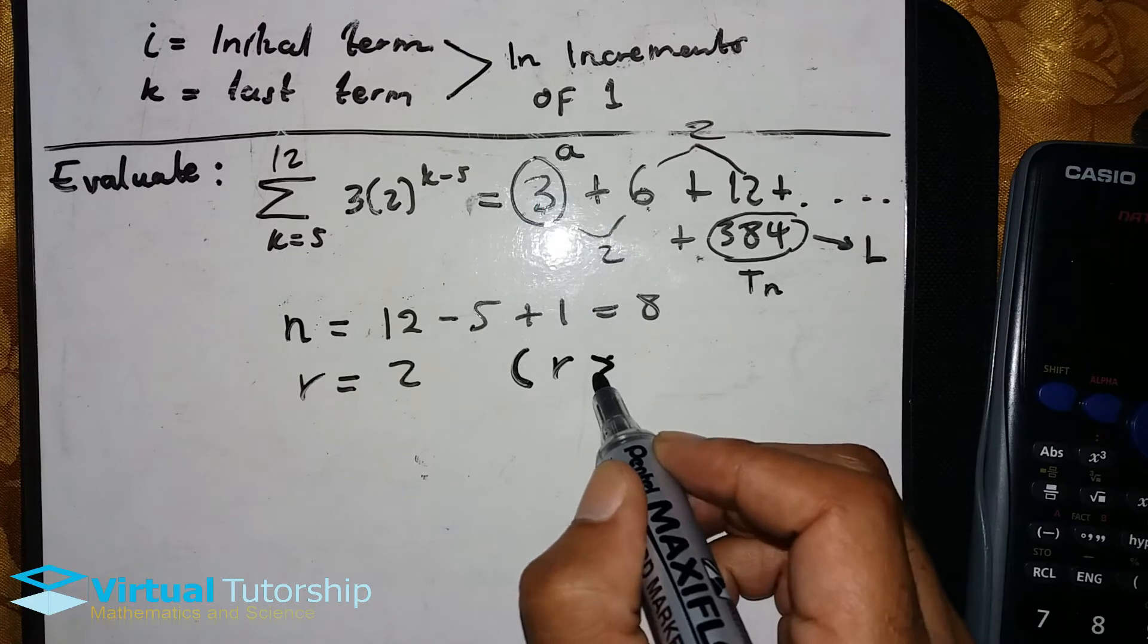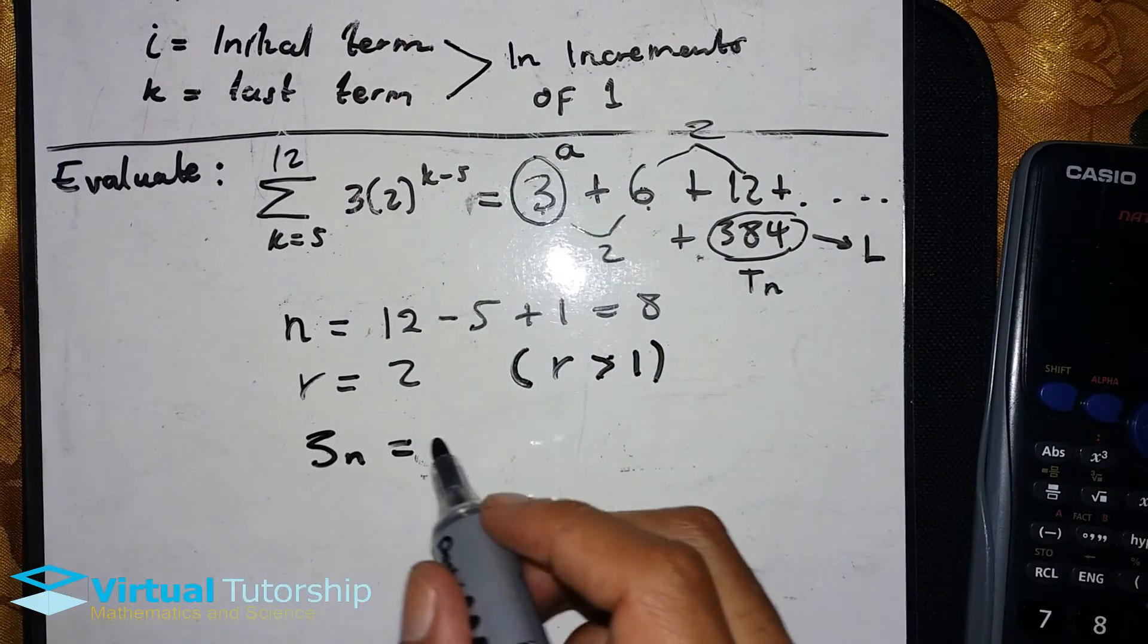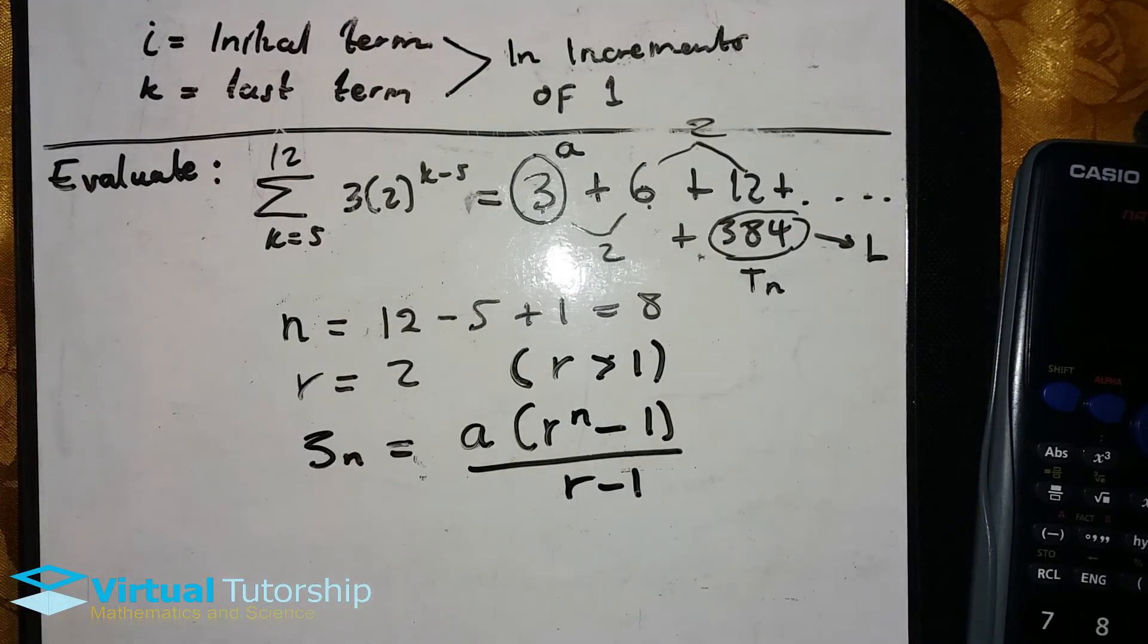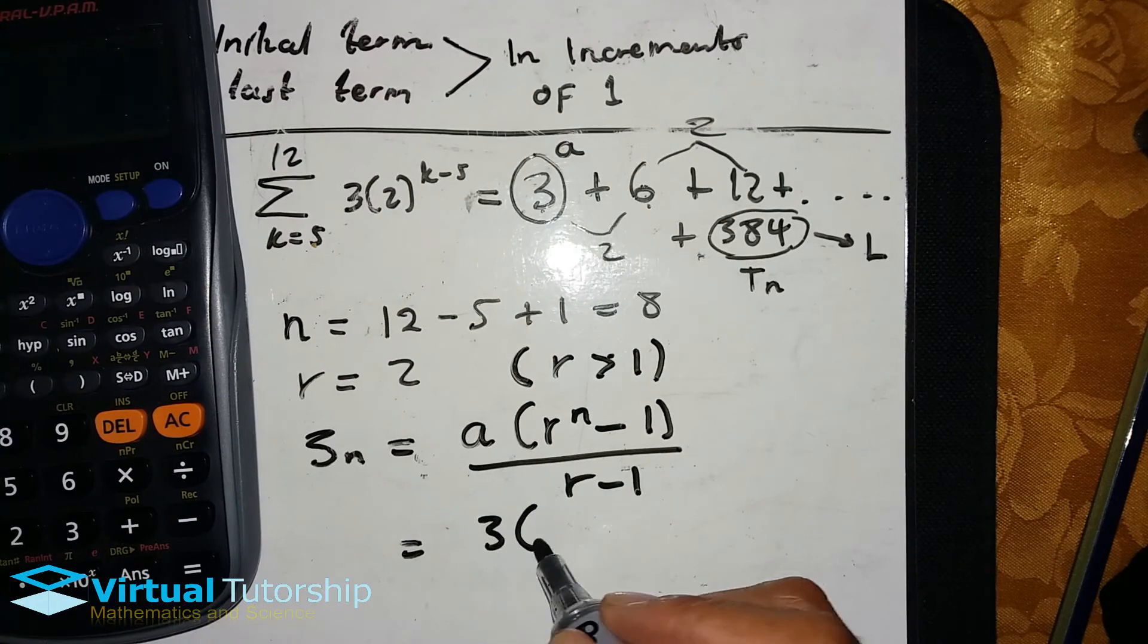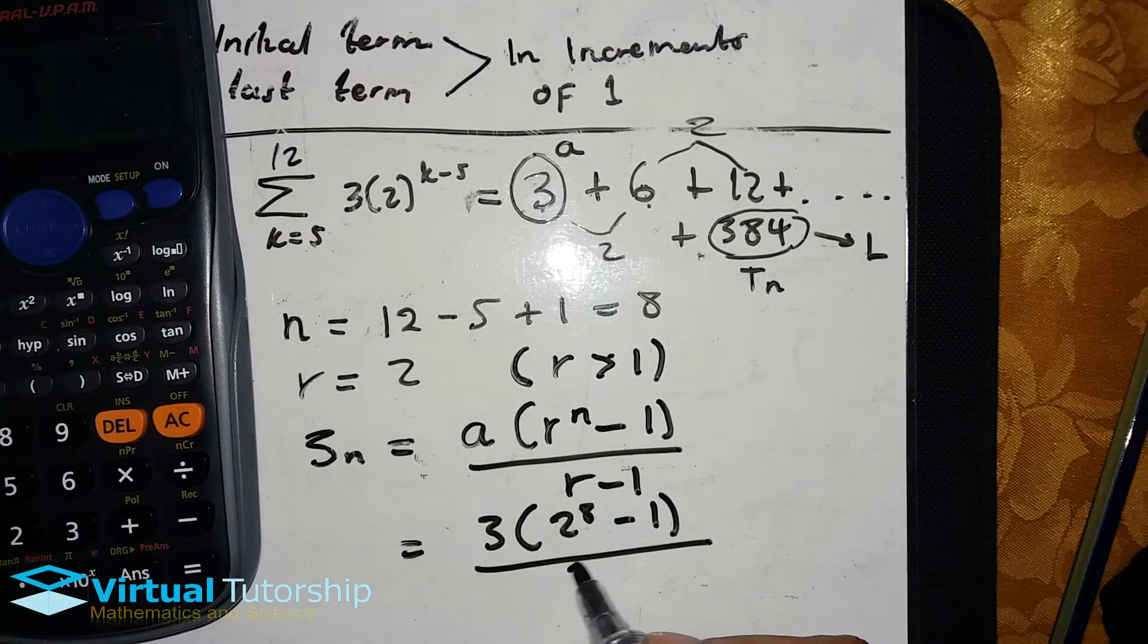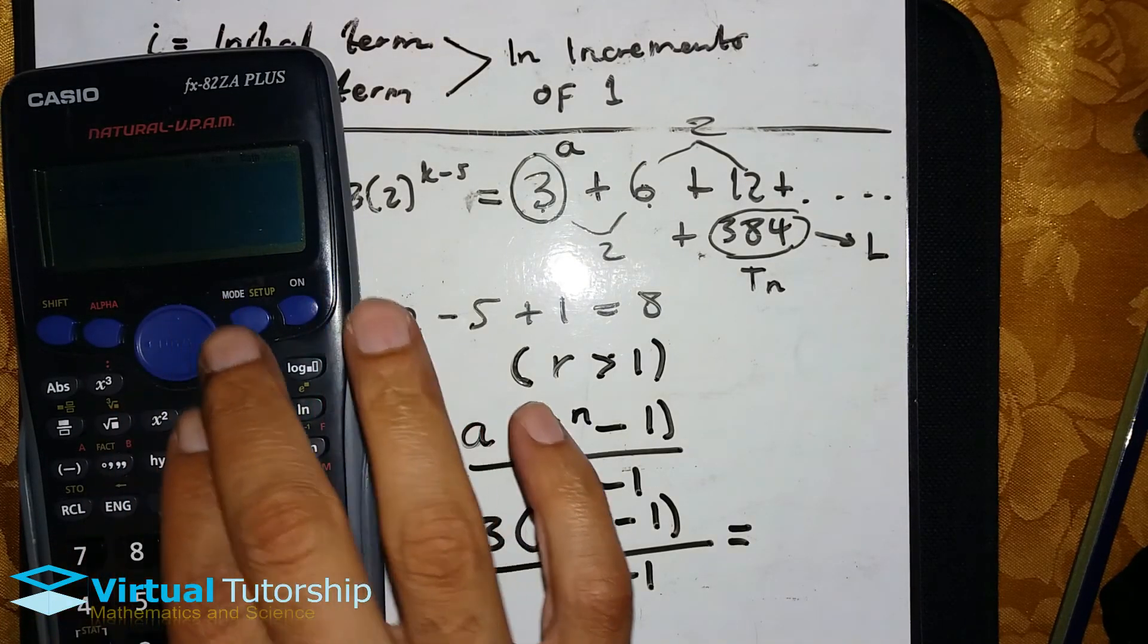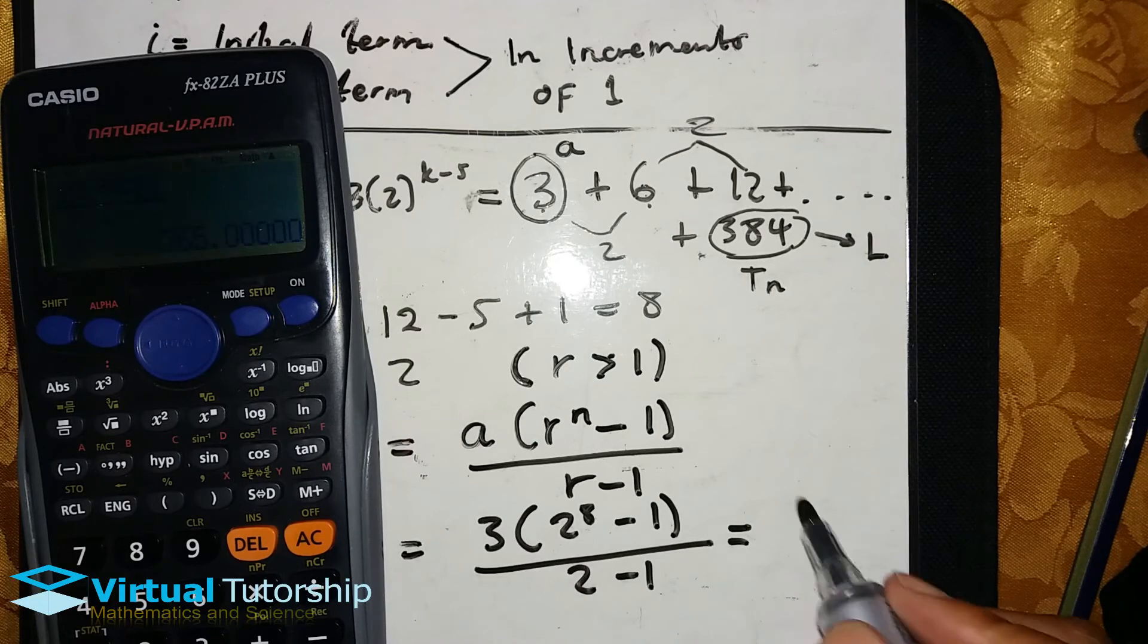So we use this formula to evaluate this sigma notation. We use this one: S_n equals a(r^n - 1) / (r - 1). So the r is 2, exponent 8 minus 1, all divided by 2 minus 1. So it's equal to 2^8 minus 1, minus 1, divided by 2 minus 1, which is 1.